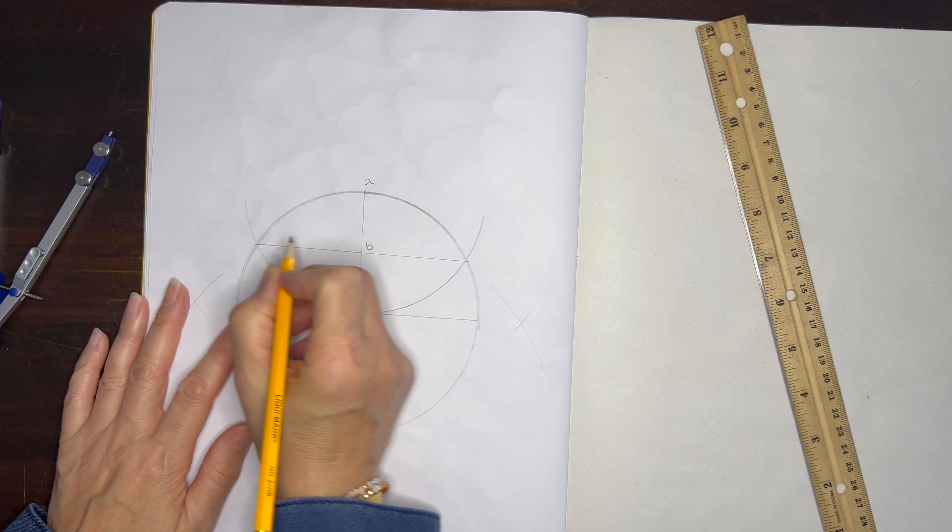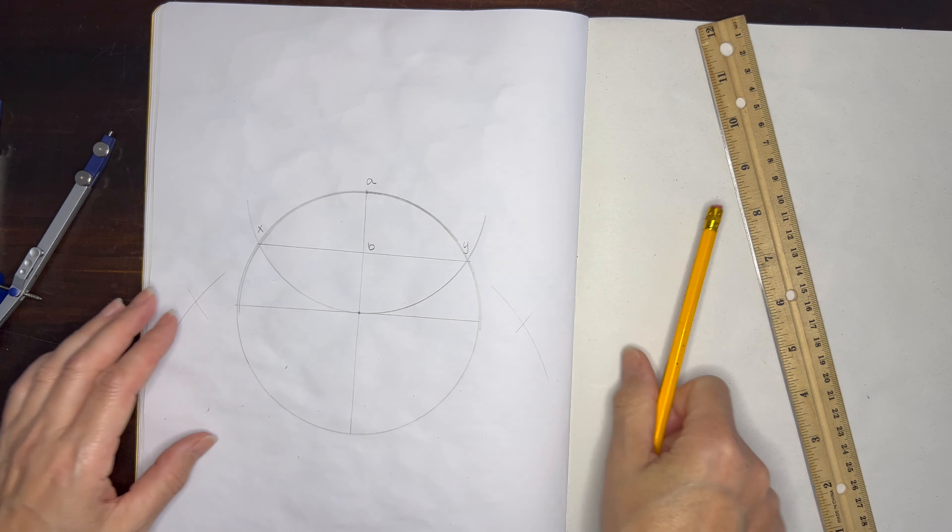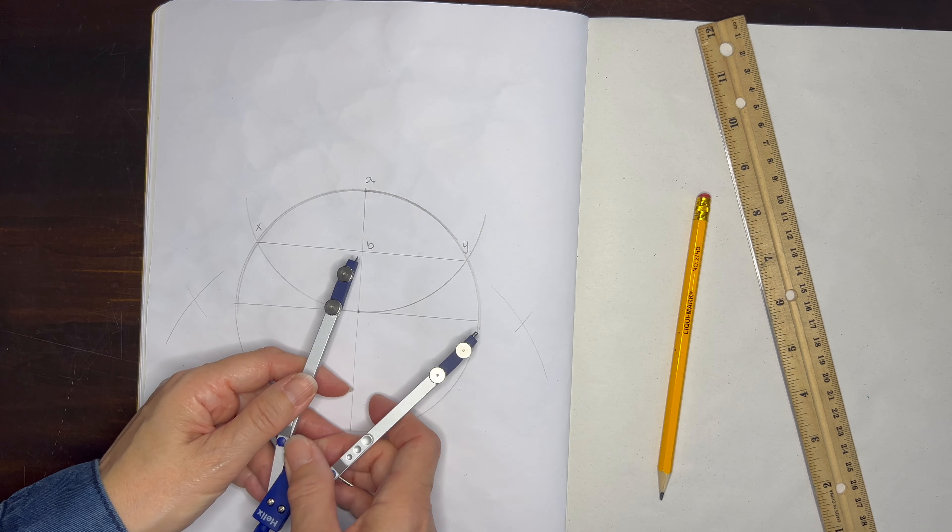I've labeled the top of the diameter A, the bisecting of the radius B, and then X and Y on either side.